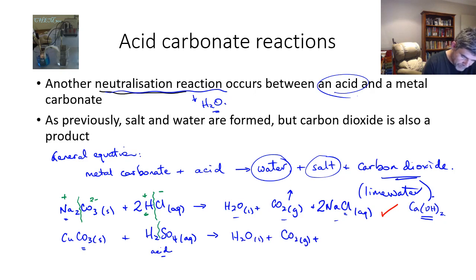And we can figure out the salt again the same way we did before by splitting our two compounds up. The cation that's here is the copper. The anion that's in the acid is the sulfate. So our salt this time would be copper sulfate. And we know that's a nice blue color, but it is also soluble. So it will be aqueous.